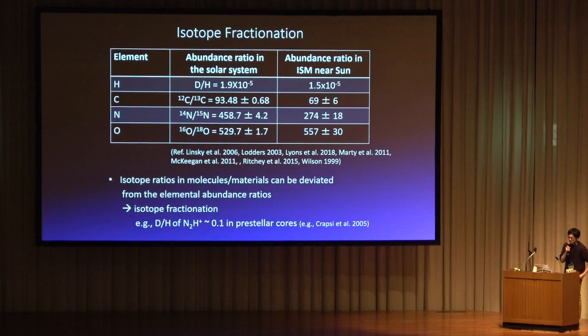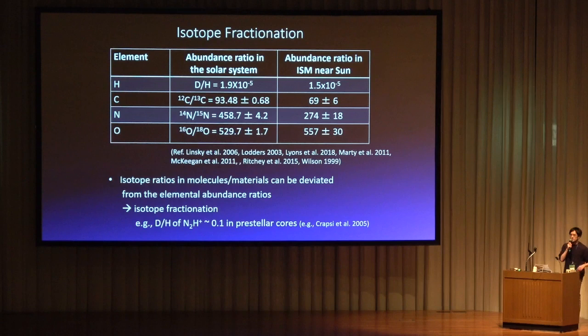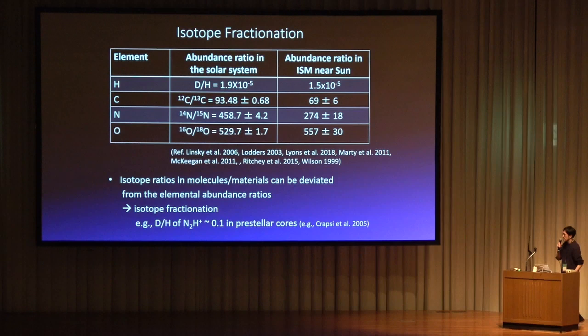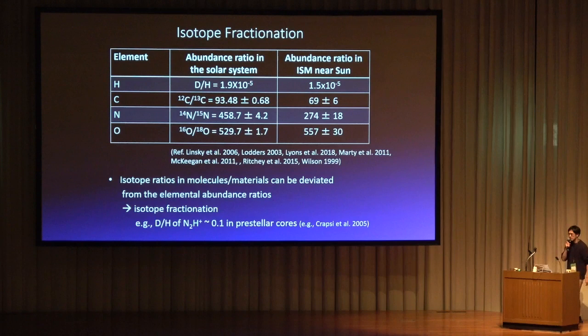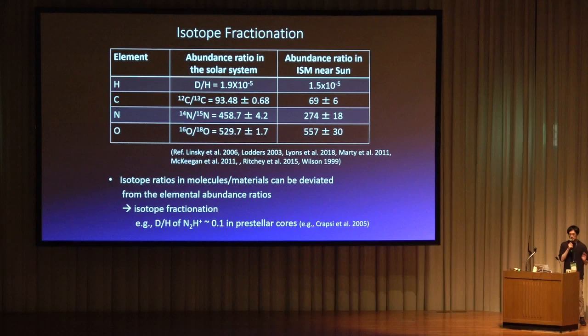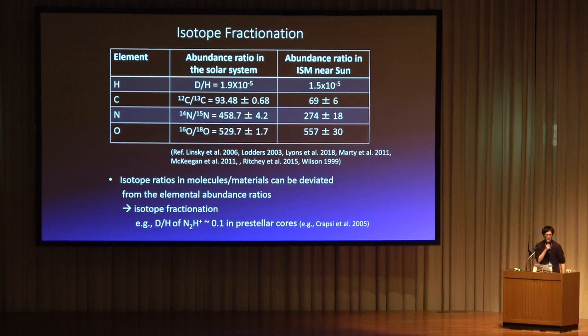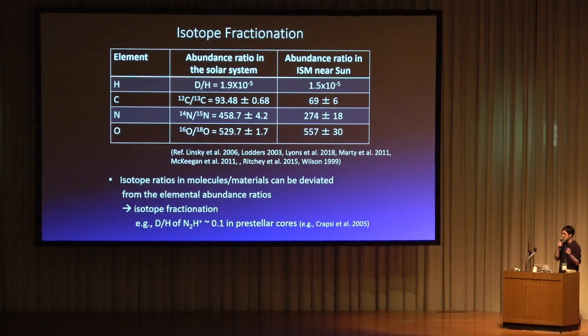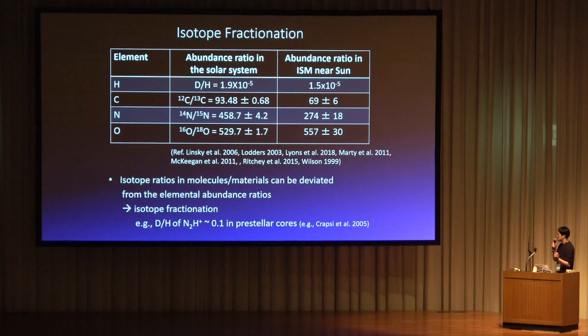Let's start with the very basics of isotope chemistry. We have measurements of the elemental abundance ratio of isotopes in the solar system and also in the local ISM. They are not significantly different but not identical, reflecting chemical evolution in the galaxy. If isotopes of a given element behave in the same way in chemistry, we should expect the isotope ratio in molecules to equal the elemental abundance ratio. However, in reality, different isotopes behave differently, and as a result, isotope ratios of molecules can deviate from the elemental abundance ratio. This is isotope fractionation.